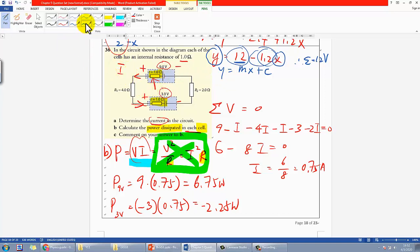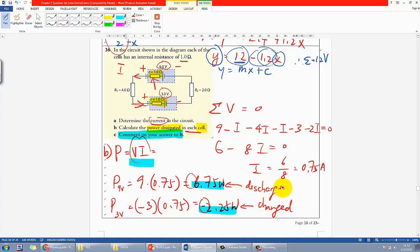Part c is asking you to comment on the answer in b. Basically, I think what they're expecting is you can say this is negative, this is positive, and therefore this one is being charged and this one is discharging. Or in other words, this is losing energy and this is gaining energy.